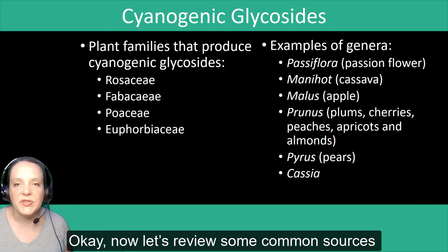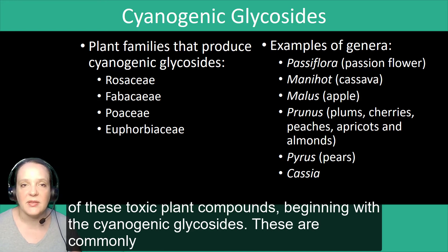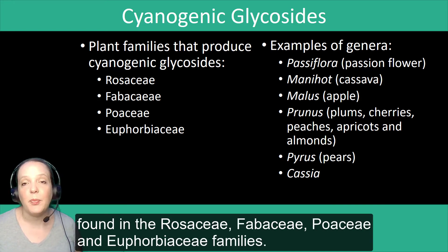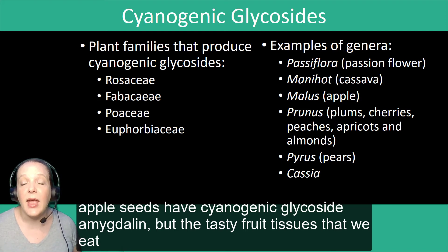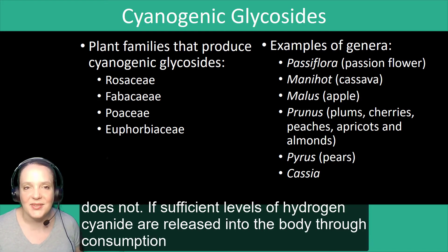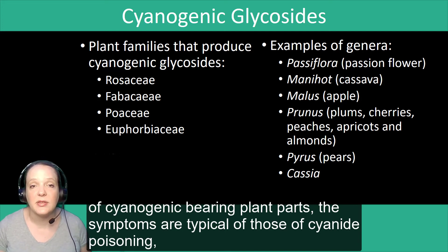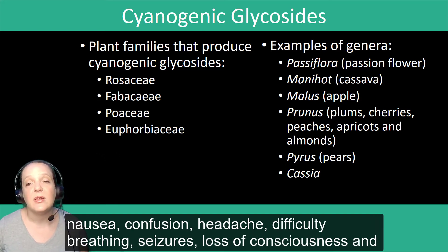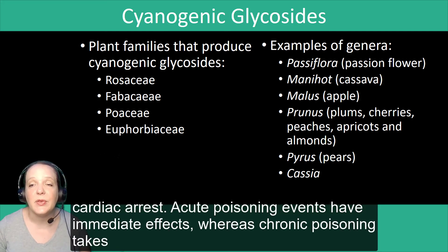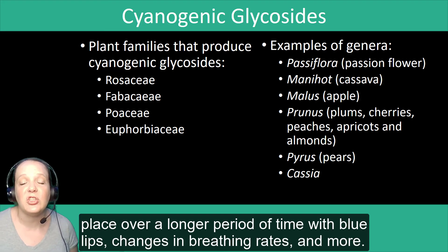Now let's review some common sources of these toxic plant compounds, beginning with the cyanogenic glycosides. These are commonly found in the Rosaceae, Fabaceae, Poaceae, and Euphorbiaceae families. Note that the compounds are not equally distributed in all plant tissues — for example, apple seeds have the cyanogenic glycoside amygdalin, but the tasty fruit tissues we eat do not. If sufficient levels of hydrogen cyanide are released into the body, symptoms include overall weakness, nausea, confusion, headache, difficulty breathing, seizures, loss of consciousness, and even cardiac arrest. Acute poisoning has immediate effects, whereas chronic poisoning takes place over longer periods, with blue lips, changes in breathing rates, and more.